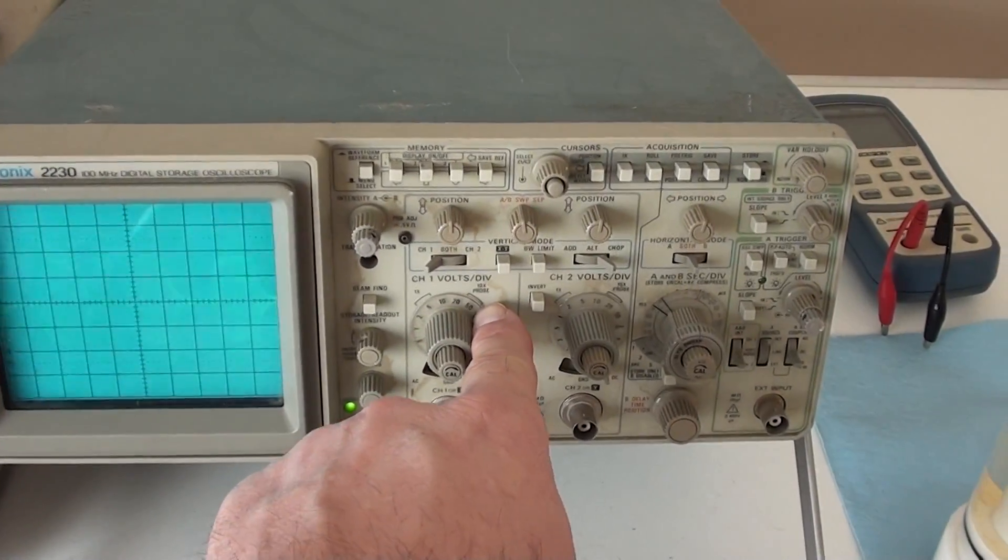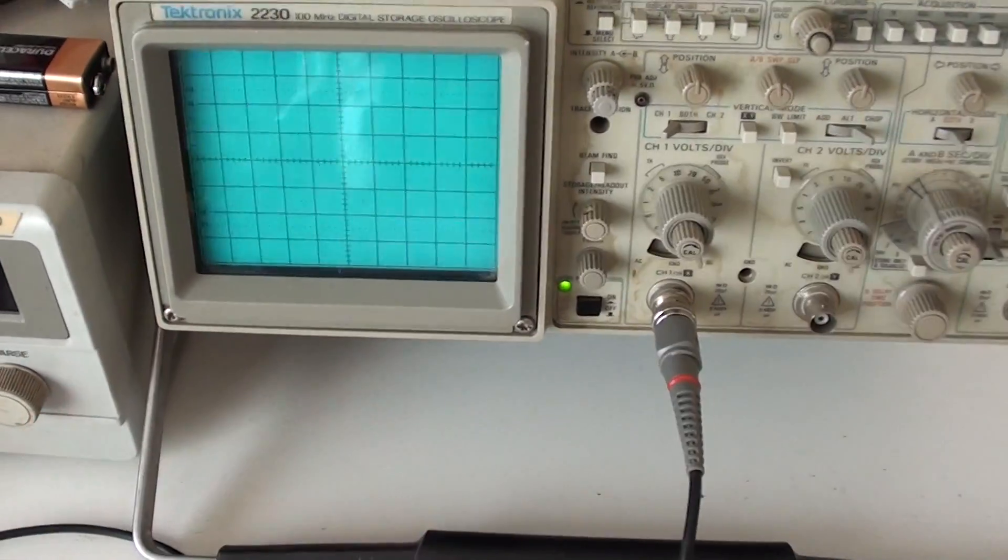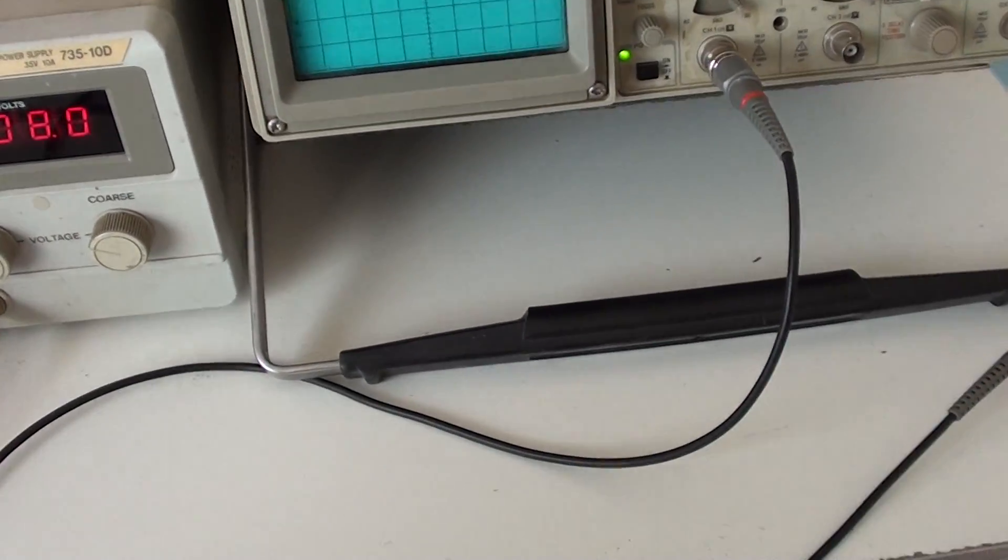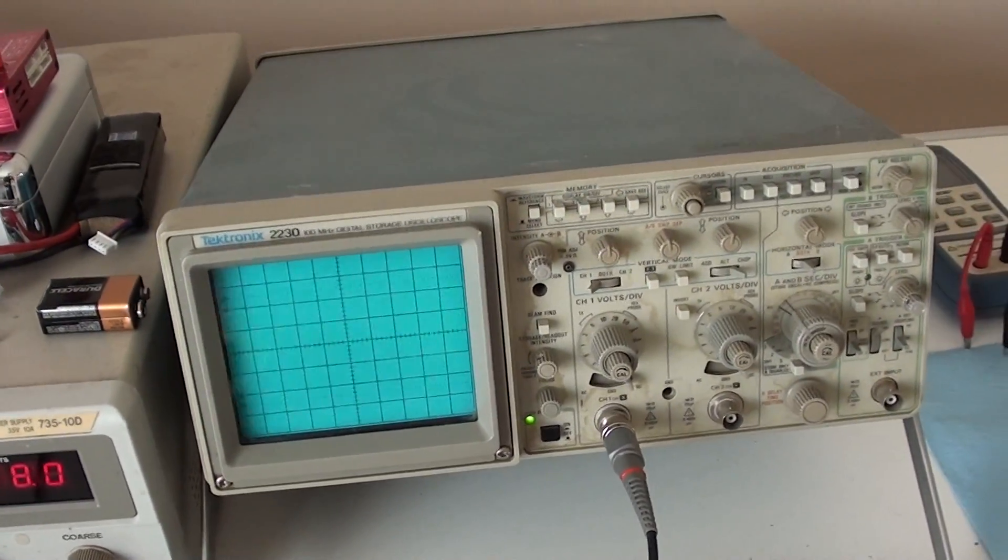What I've got is I've got 50 volts per division. I'm using a times 10 probe. So I'm at 200 volts at its peak. Tweak this a little, there we go. There's 200 volts AC.